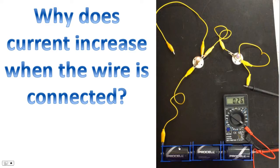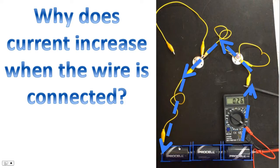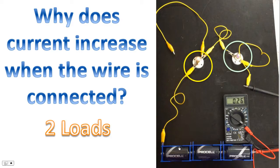So the question is, why does current increase when the wire is connected? Well, let's look at the path electricity takes. This is effectively the path that current takes for this particular circuit. It goes through the multimeter, and then it goes through the two loads. The two loads have been circled. They are the light bulbs.